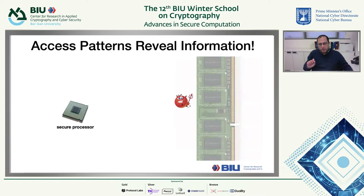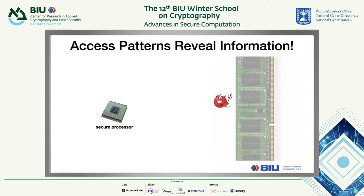Now we want to look at the case where the CPU is trusted but the memory is untrusted. You can assume the adversary can view the memory. You might say: let's just encrypt all the data whenever we read or write. But it turns out there is a leakage in the form of an access pattern that leaks a lot of information about our computation. Let's look at a few examples.